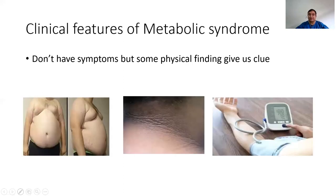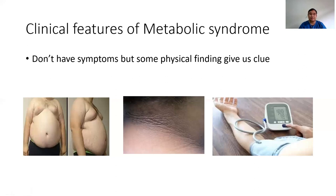What are the clinical features of metabolic syndrome? Metabolic syndrome is not a disease, so it does not have any symptoms — most often the patient will have no symptoms. But there are physical findings that clue us to work up in the line of metabolic syndrome. If a patient seems obese or overweight, we have to work up for metabolic syndrome. A feature of insulin resistance like acanthosis nigricans is a marker of insulin resistance, and if you see it, you must suspect and work up for metabolic syndrome.